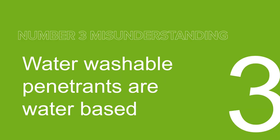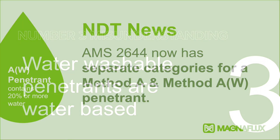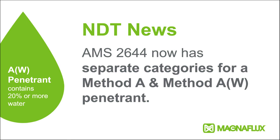Water washable penetrants are water-based — actually, a penetrant can be water washable and not contain any water in its formula. What water washable penetrants do contain are surfactants, which allow the penetrant to be removed from the part surface with only water rinsing. Emulsifiers used in methods B and D are not needed to remove water washable penetrants. AMS 2644 now contains a separate category for method A penetrants that do contain water in their formulas.